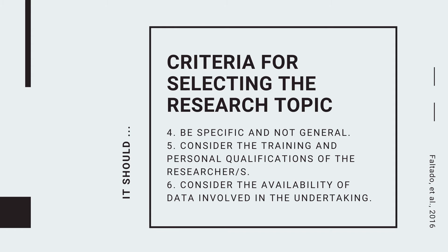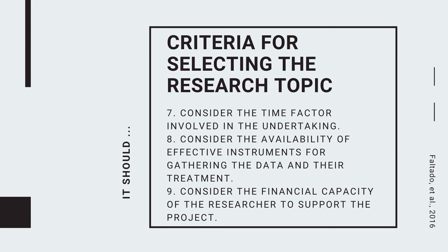Number six, it should consider the availability of data involved in the study and the methods to be employed in gathering them. Once you have thought of your research topic, you should already have in mind a plan for data gathering and what methods will be used to analyze the data. Number seven, it should consider the time factor involved in undertaking — specifically, how long you are going to do the data gathering and other activities.